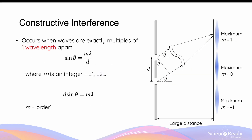Young's observation can be further analysed by considering interference. Each maximum or bright spot is formed due to constructive interference, which occurs when two or more waves are exactly one wavelength or a multiple of wavelengths — let's call that M lambda — apart. When this happens, the crest and crest of the two waves will add up, and they will undergo constructive interference, producing a wave that has double the amplitude.